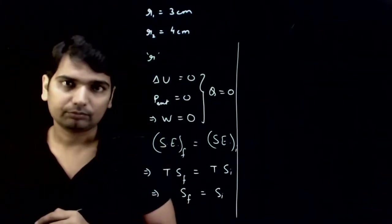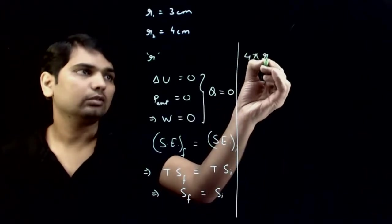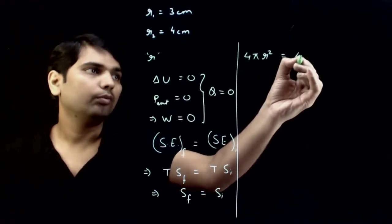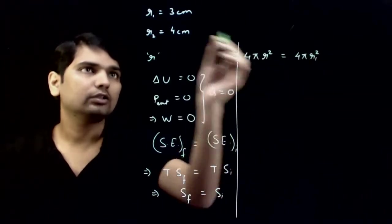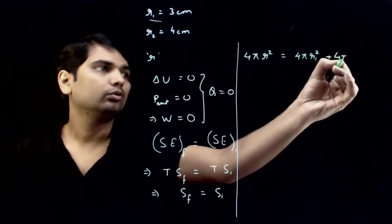This is why we can say that 4π r square, which is final surface area, is equal to 4π r1 square plus 4π r2 square.